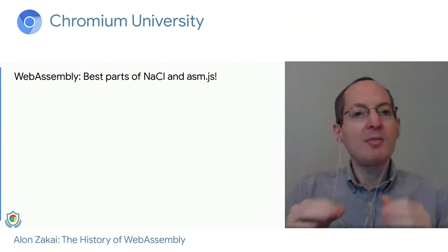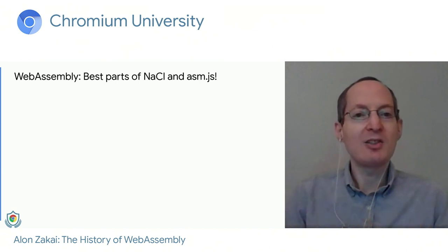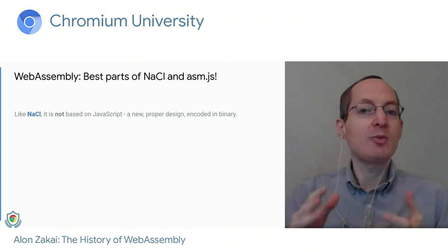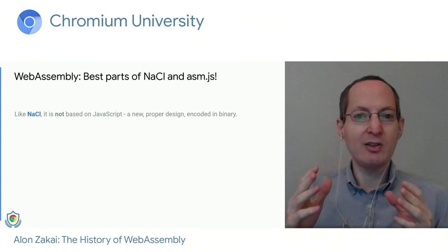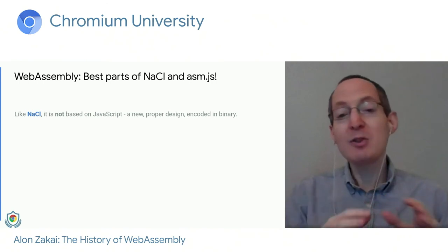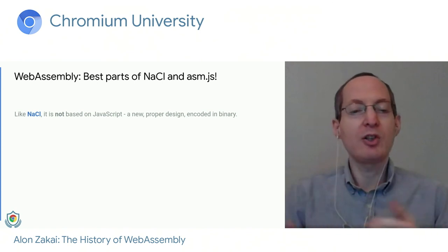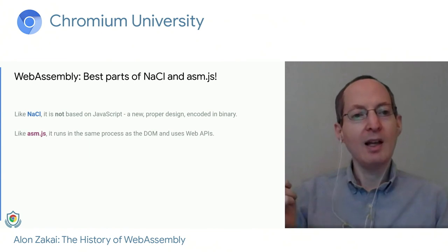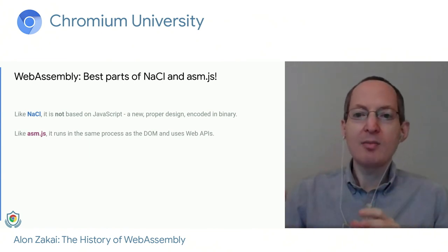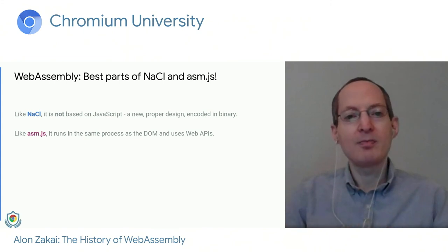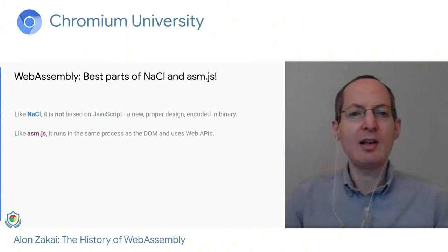The history of how we came to standardize WebAssembly shows itself in what WebAssembly is. It has some of the best parts of both Native Client and asm.js. Like NaCl, it's not based on JavaScript — you do need a new proper design and a binary format; JavaScript is wonderful for many things but there are some things that require starting from scratch. And like asm.js, it runs in the same process as the DOM and can call web APIs through JavaScript very directly — it's not in a side process with a new set of APIs, so it fits into the web as well as compiled code can.